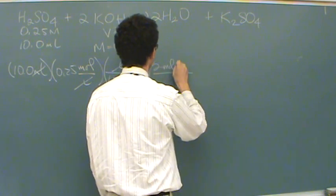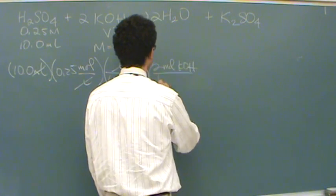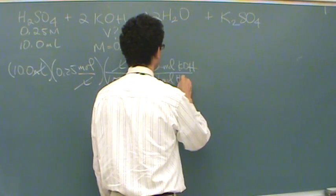There's 2 moles KOH for every 1 mole of the H2SO4.